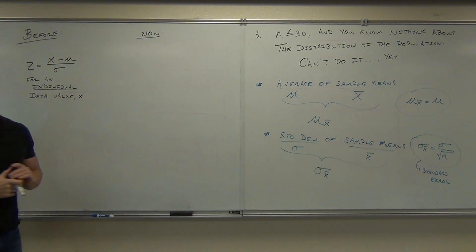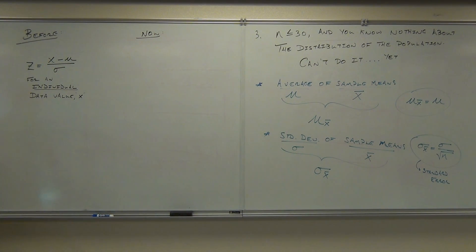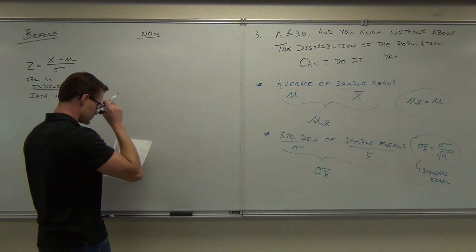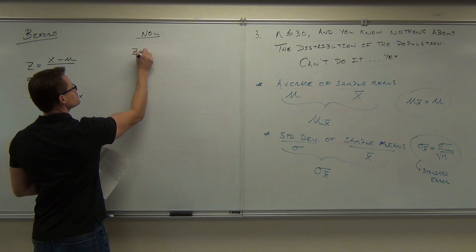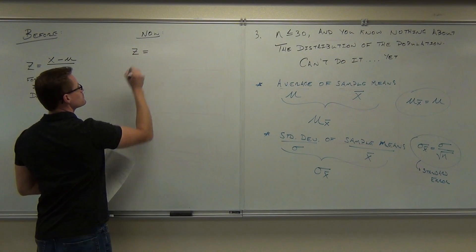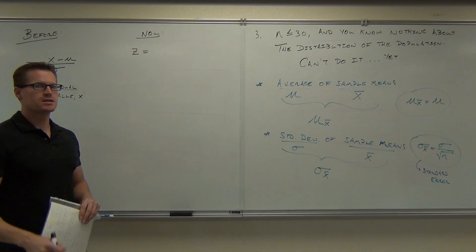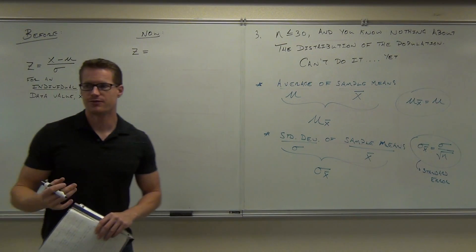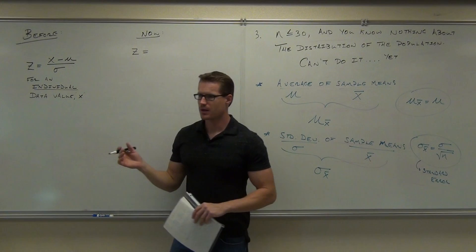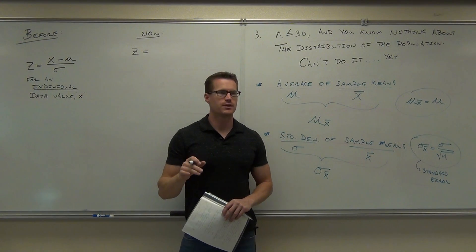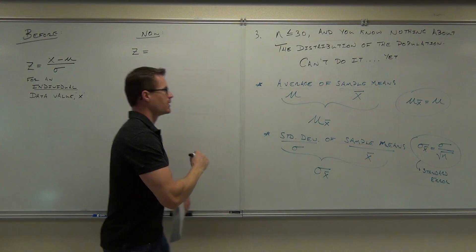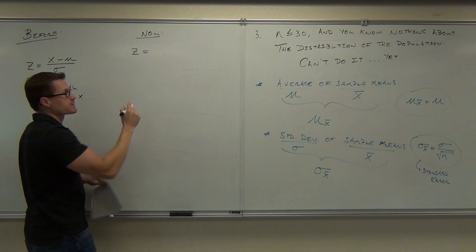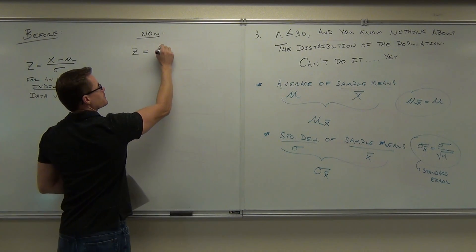Here's what the jump lets us do — let's see what all this theory boils down to. Instead of an individual data value, what I have now is the mean of my sample. In other words, instead of x, I'm going to deal with x-bar.